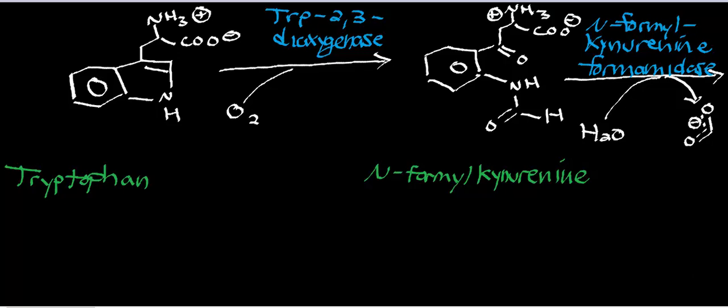One thing I want to point your attention to: in tryptophan, we have aromaticity in the R group. What type of aromaticity is it? If you look at this ring, you would tell me it's an indole ring. Indole rings are doubly aromatic — they're a bicyclic structure, and both rings are actually aromatic. What is the stability of an aromatic ring?